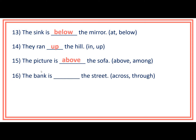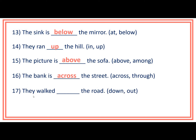Number 16: The bank is ___ the street. Prepositions inside the bracket are across and through. Answer: The bank is across the street. Number 17: They walked ___ the road. Prepositions inside the bracket are down and out. Answer: They walk down the road.